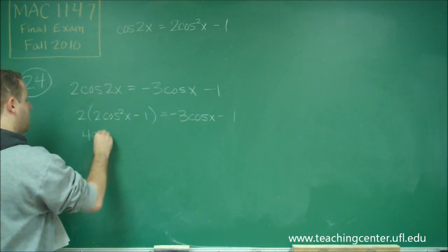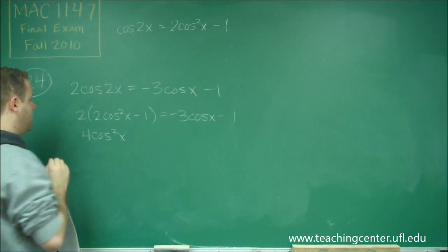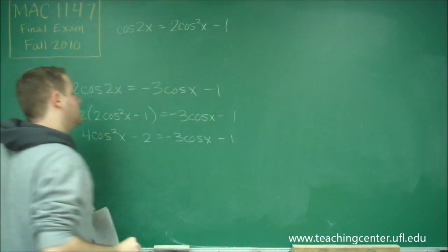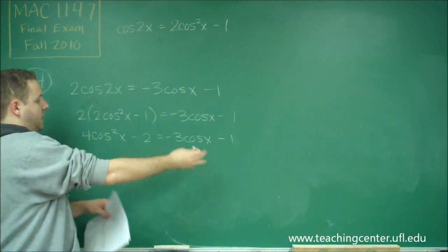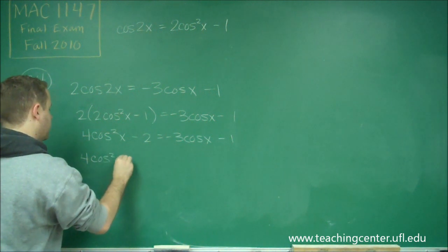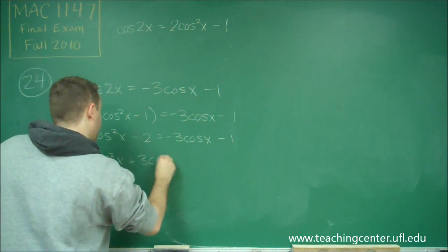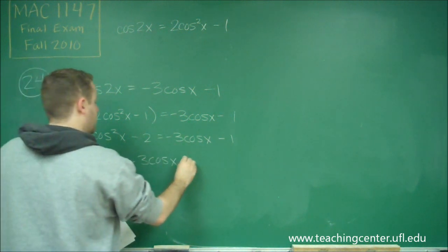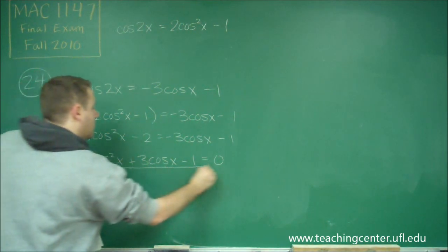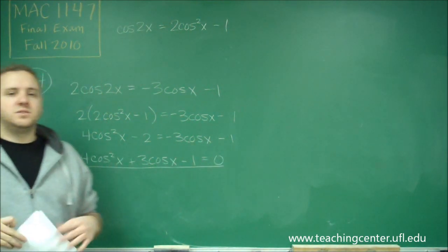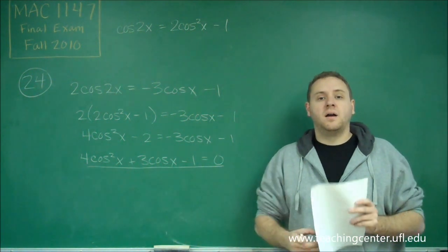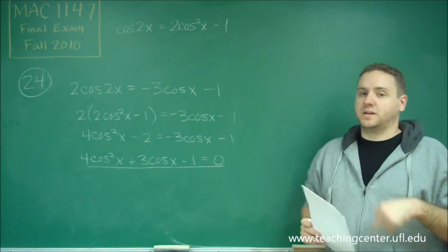We have 4 cosine squared x minus 2 equals negative 3 cosine x minus 1, and now we're going to get everything onto the left side. Through some simplification — when you add 1 over there, you're going to get minus 1 equals 0. This is the form you always want to get these into, because now this is a quadratic equation. You just have cosine as your x, like in a standard quadratic.